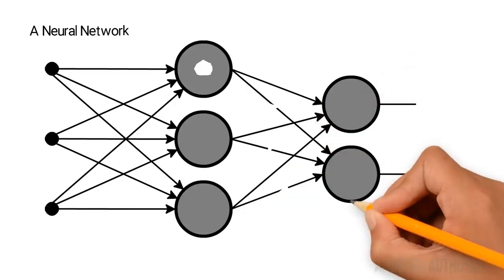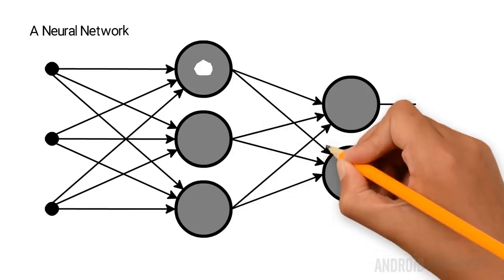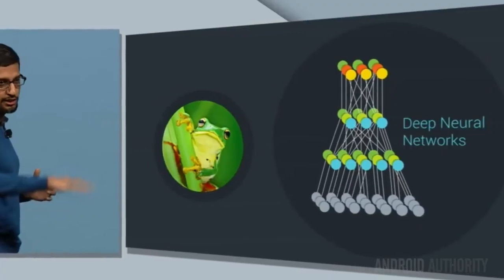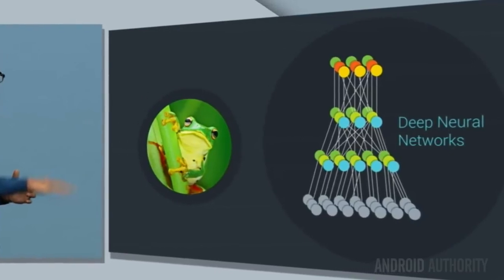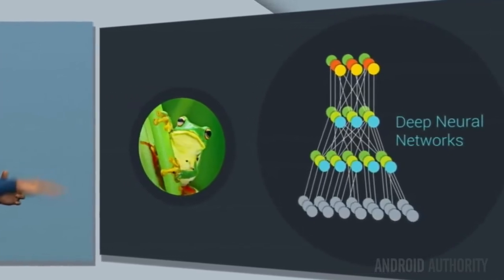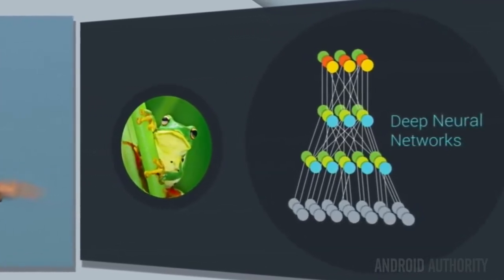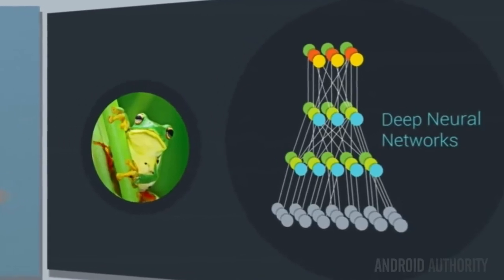A neural net is a machine learning technique modeled on the way neurons work in the human brain. Given a number of inputs, the neuron will propagate a signal depending on how it interprets those inputs. In machine learning terms, this is done by matrix multiplication along with an activation function. The use of neural networks has increased significantly in recent years, and the current trend is to use deep neural networks with several layers of interconnected neurons.